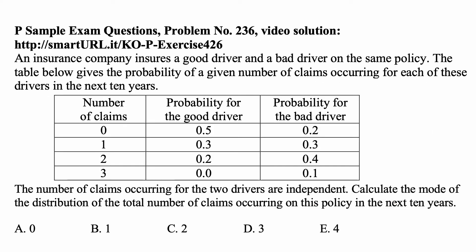Here's a problem for today for exam P on probability. An insurance company insures a good driver and a bad driver on the same policy. The table below gives the probability of a given number of claims occurring for each of these drivers in the next ten years.